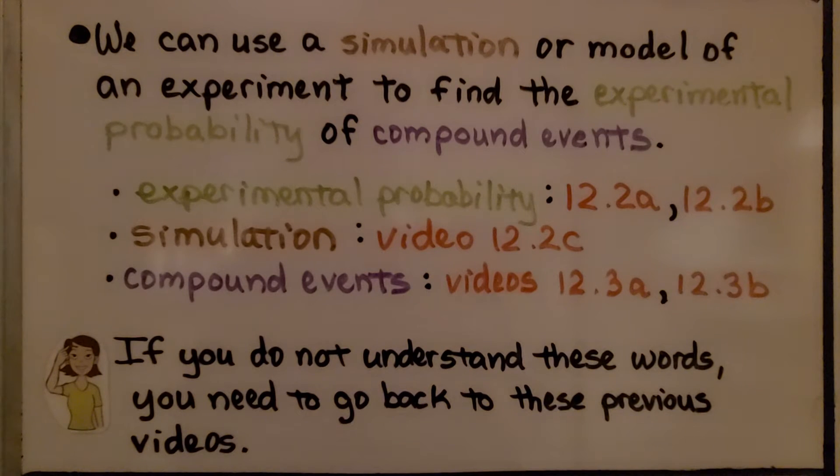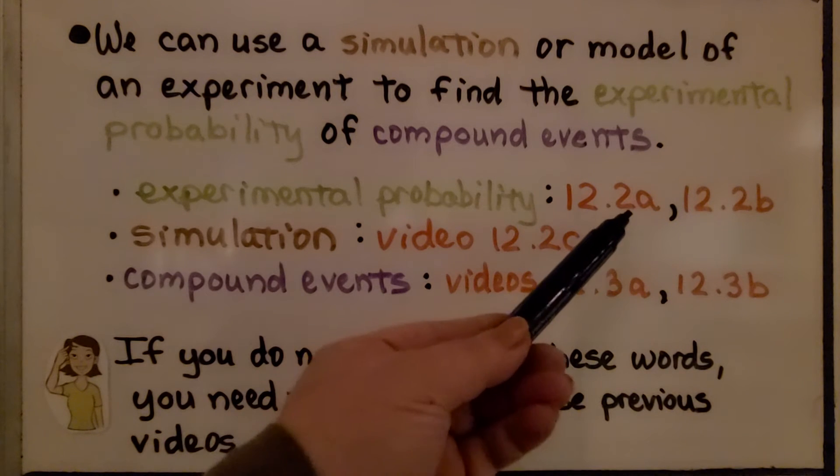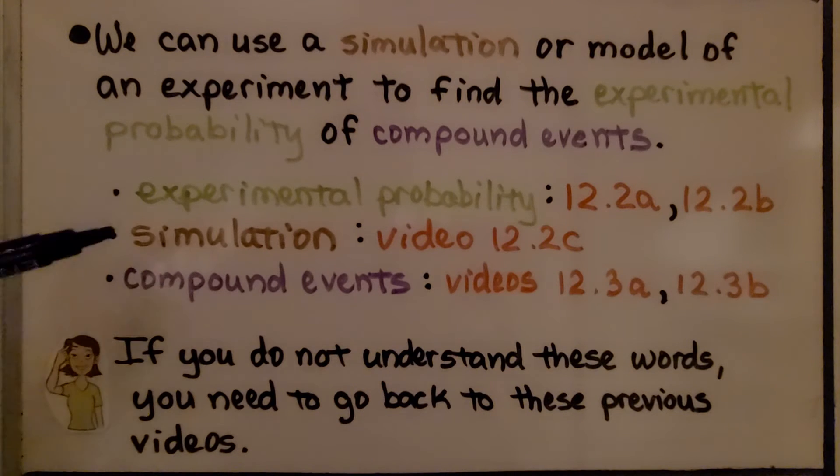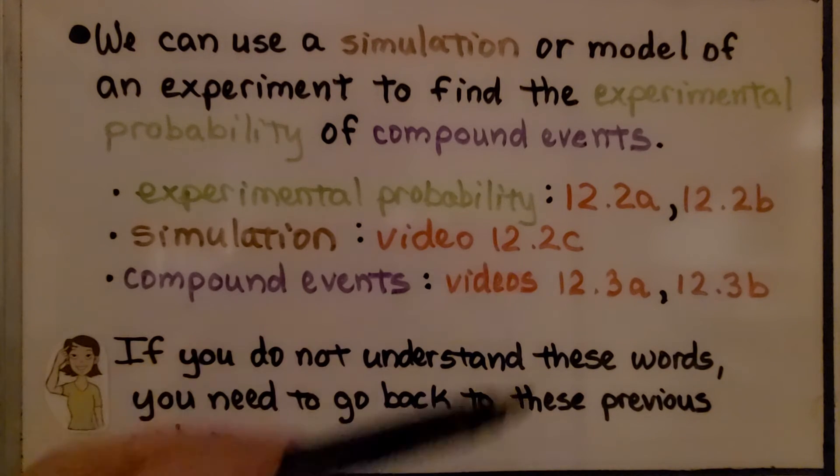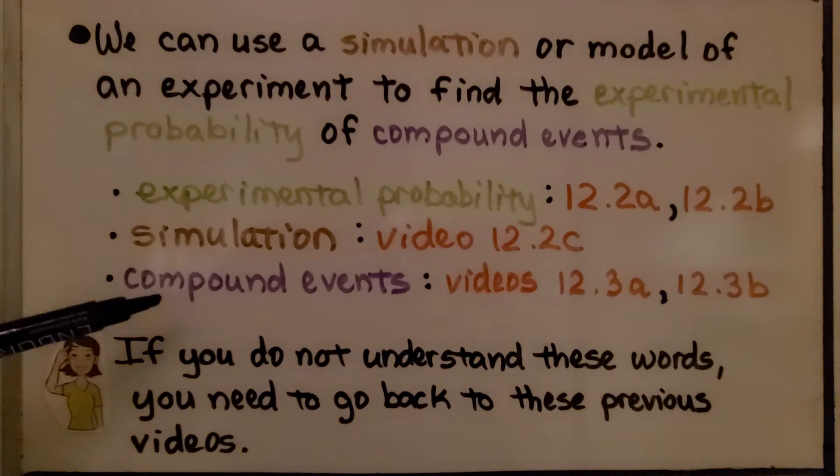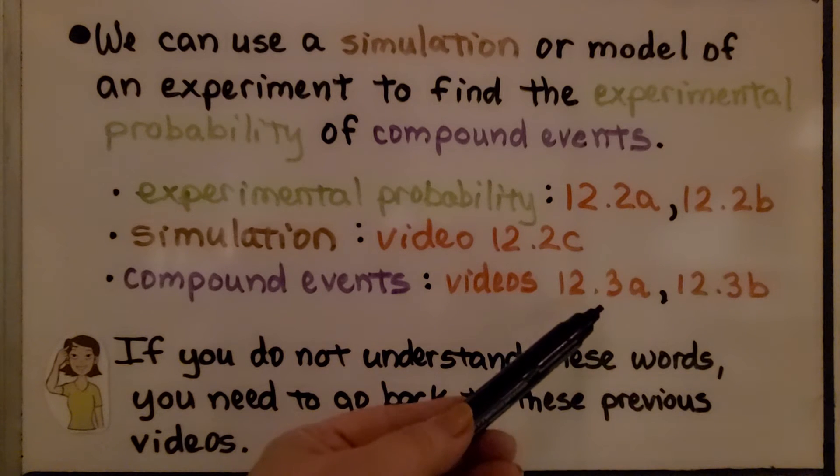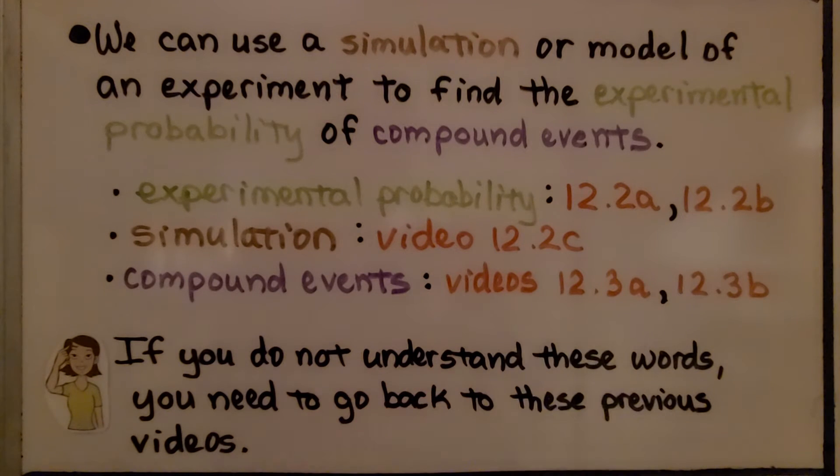We can use a simulation or model of an experiment to find the experimental probability of compound events. We talked about experimental probability in 12.2a and 12.2b, simulation in 12.2c, and compound events in the previous two videos, 12.3a and 12.3b.